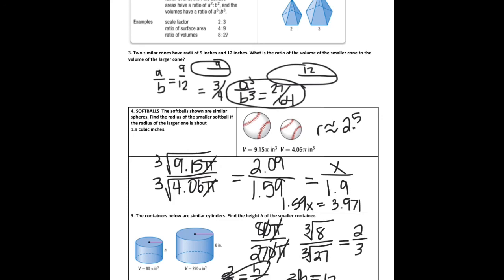So basically that's it. Your assignment is a short one today. You are just going to use similarity ratios to find the volume or the surface area of a missing shape, or you may find the missing measure of the similar solids given the volume or the surface area.